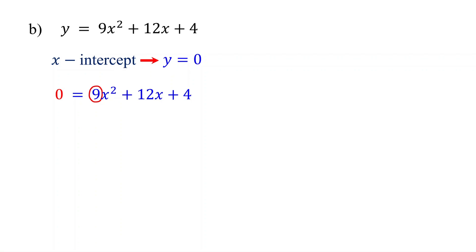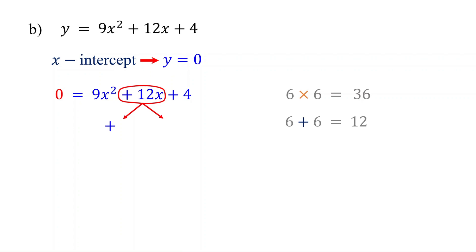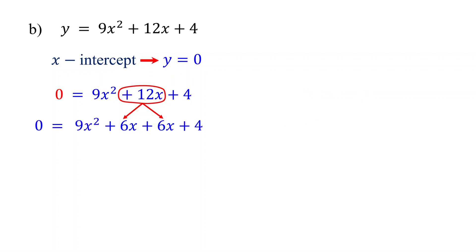First, multiply 9 and 4, which equals 36. Then find two numbers that multiply to give 36 and add up to 12. We know that 6 times 6 equals 36, and when we add them we get 12. So these are the two numbers we are looking for. Next, split the middle term using these numbers. We can rewrite 12x as 6x plus 6x, and the other terms in the equation stay the same. Next, factor this by grouping: group the first two terms together and the last two terms together, then factor out the greatest common factor from each group.